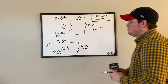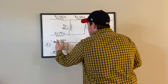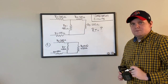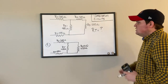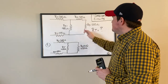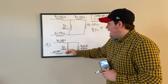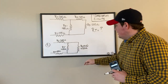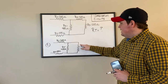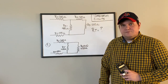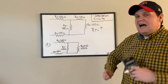Starting at the back again — remember, I always want to work from here towards my source. Now that I've got the two series resistors combined, I can see that R3 and RC4,5 are in parallel with each other.